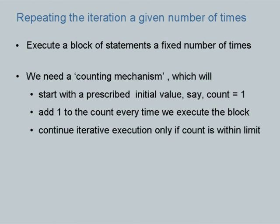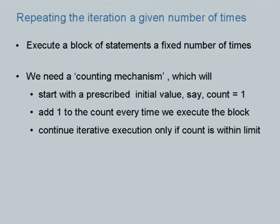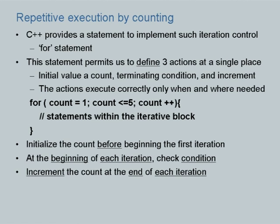The theme is: we want to execute a block of statements a fixed number of times. We need something to count, which could be a separate variable called count. We initialize it to 1 outside the body of iteration, then increment it by 1 every time we execute the iteration. A condition is checked every time whether to continue or stop — we continue only if count is within limit. This repetitive execution by counting is facilitated in C++ by a separate statement altogether.